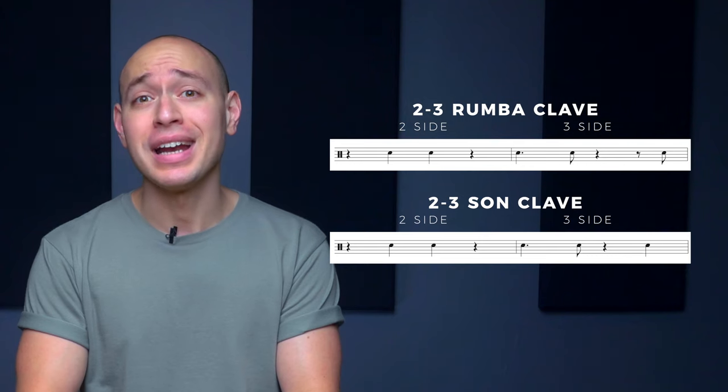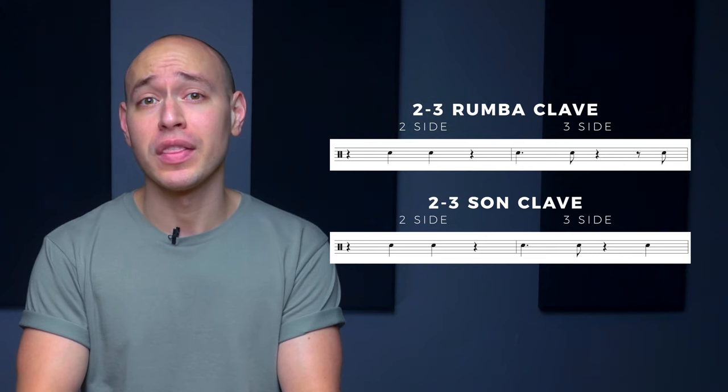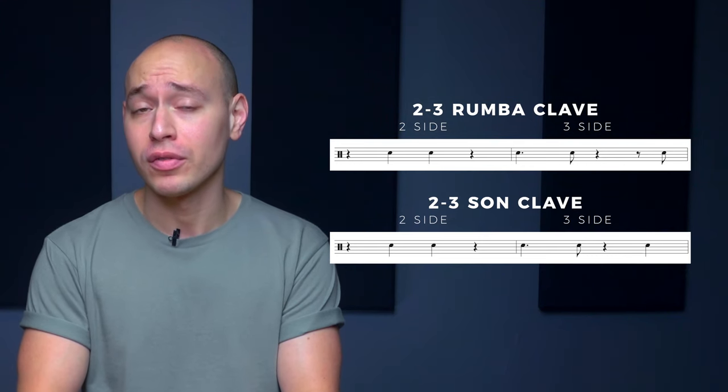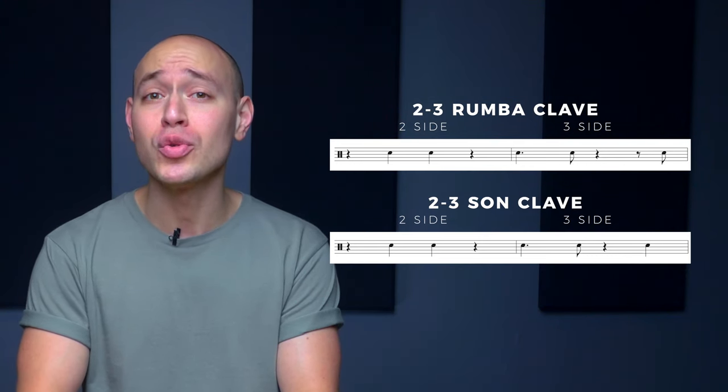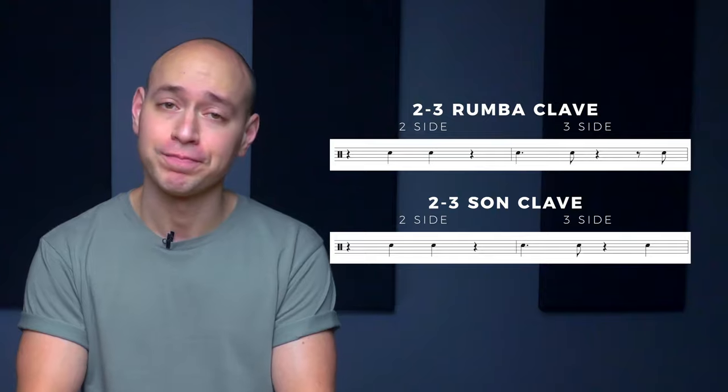Other than that, the claves are identical as far as they're written in 4/4, and will always be a binary or two-sided pattern. So unless otherwise noted in a particular arrangement, the clave will always flow in the same continuous direction. And because it's a two-bar phrase, as long as we have even numbered phrases throughout a song or arrangement — 4, 8, or 16, etc. — the clave direction we begin with will stay consistent throughout.